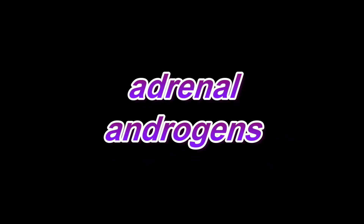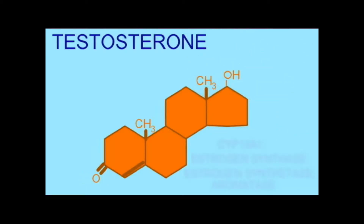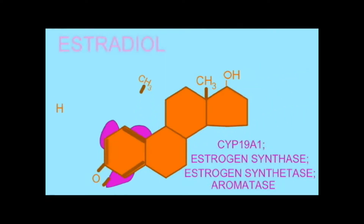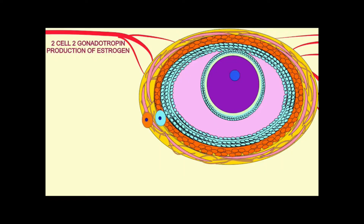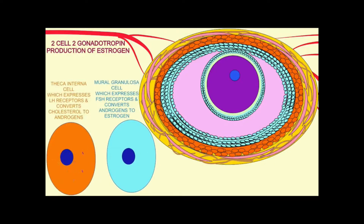Cholesterol is a steroid which, among other things, is incorporated into every cell membrane in the human body. Cholesterol can also be converted into other steroids which may serve as hormones. Some of these are androgens, which are often associated with male sexual differentiation, but while androgens might be associated with the testes, they can also be produced in other regions of the body. For example, the ovaries make androgens such as testosterone as precursors to estrogen.